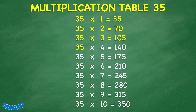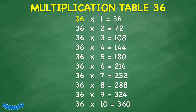35 times 4 equals 140. 35 times 5 equals 175. 35 times 6 equals 210. 35 times 7 equals 245. 35 times 8 equals 280. 35 times 9 equals 315. 35 times 10 equals 350. 36 times 1 equals 36.